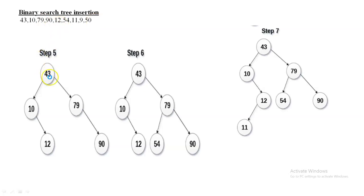12 is less than 43, so go to the left subtree. On the left side, 10 is present. Comparing 10 and 12 — 12 is greater than 10, so 12 is inserted as the right child of 10. Next, insert 54. Comparing 54 with 43 — greater, go right. On the right side, 79 is present. Comparing 54 with 79 — 54 is less than 79, so insert 54 as the left child of 79.